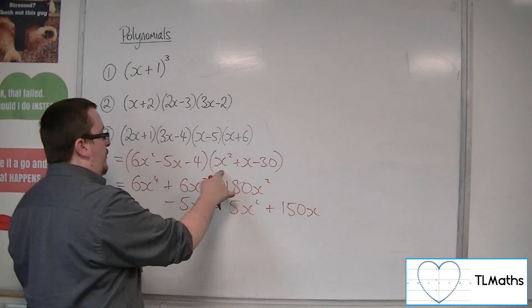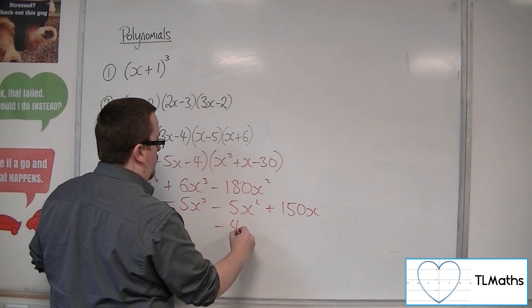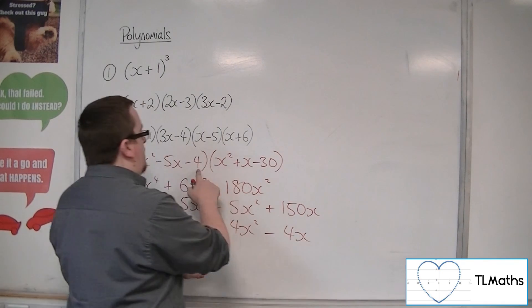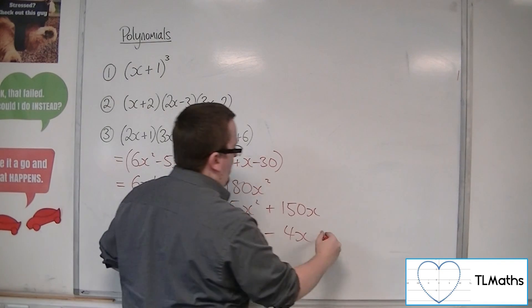Then we've got the -4 times x², so -4x². -4 times x, so -4x. And then -4 times -30 is +120.